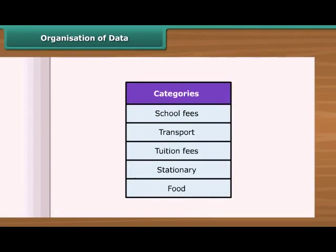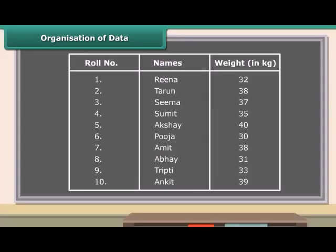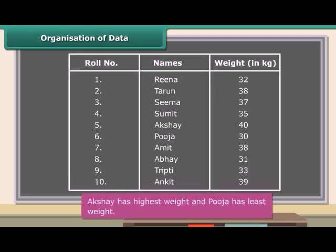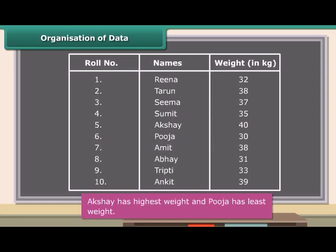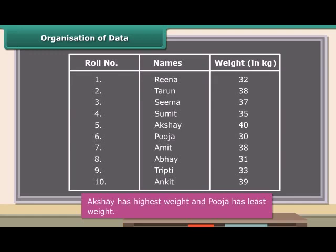We collect data to record and organize it. But why do we need to do that? Look at the following data. A class teacher of class 7 listed the weight of 10 students. Is this data easy to understand? Now look at this data — you can easily know which student has the highest weight and which has the least. So when we put data in a proper table, it becomes easy to understand and interpret. We can put many kinds of data in tabular form.